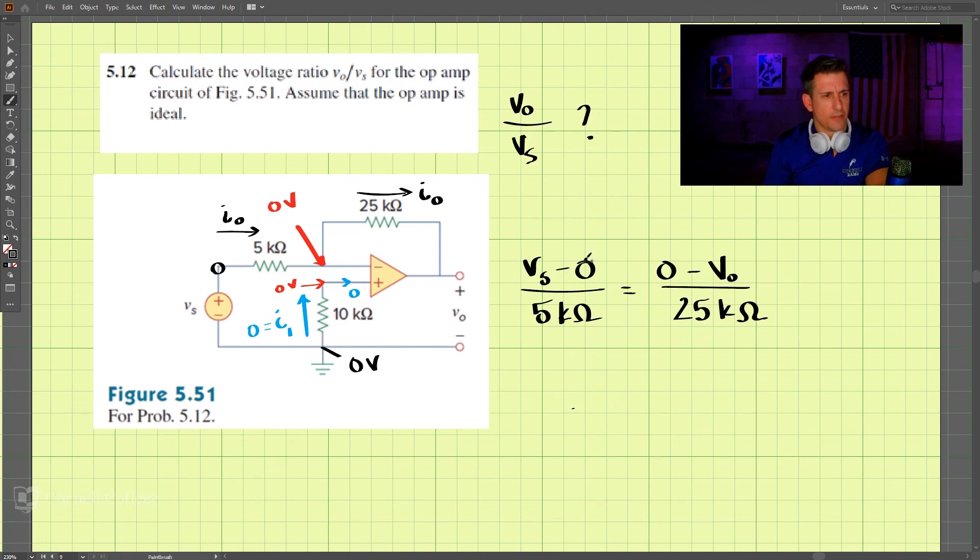So if we simplify this, let's move 25 over to this side. That is 5 VS equals negative Vout. And what we're looking for here, we'll move VS over to this side and put the negative sign on the other side. So what we end up getting is negative 5 VS equals V0.